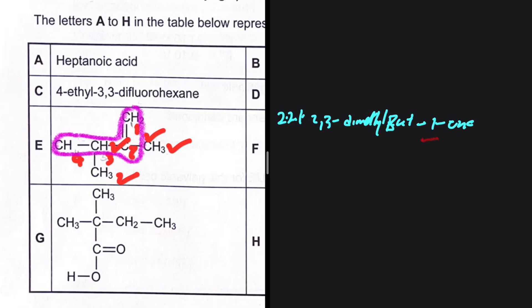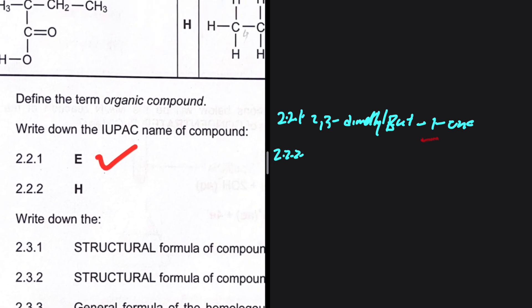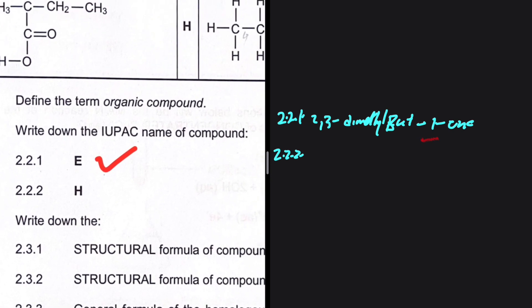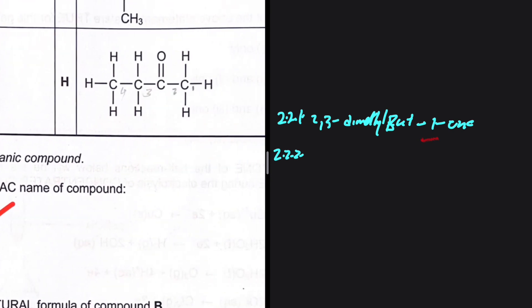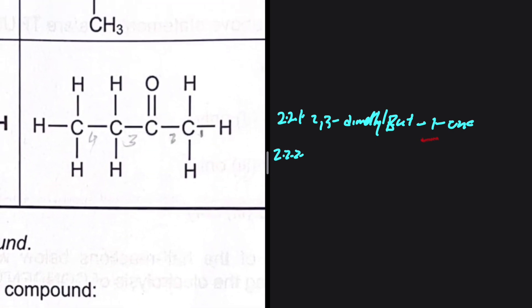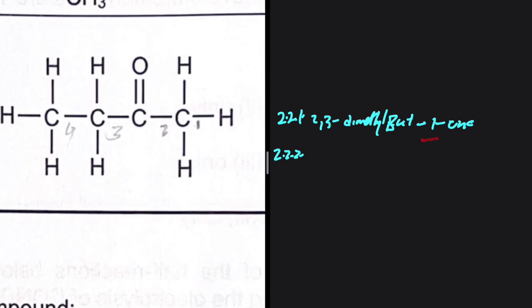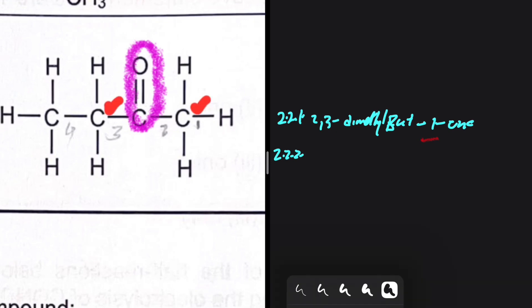For 2.2.2 we are looking at the IUPAC name of compound H. Compound H has a carbon double-bonded to an oxygen, and that carbon is sandwiched by two other carbons — that is a ketone. So I'm going to start with butane.